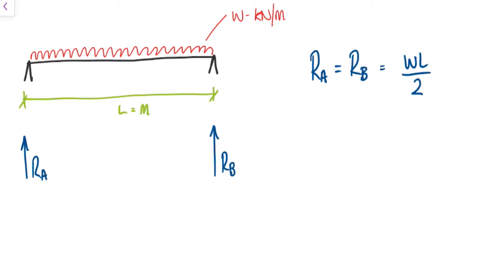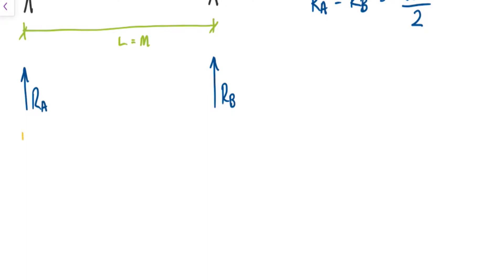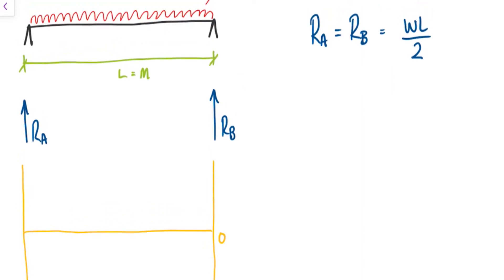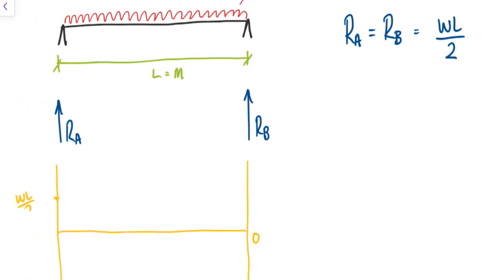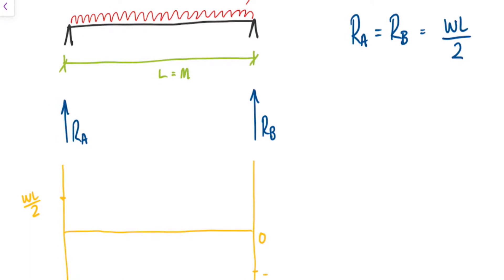And once you have that, you can come down here and draw the shear force diagram. The zero line is here, and our first point will be WL over 2, and our last point will be minus WL over 2. And because it is a UDL, you're going to get a triangular shaped shear force diagram.